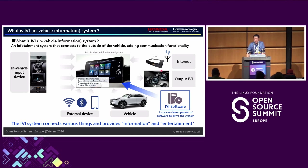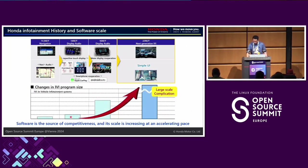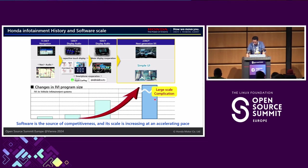For example, 32 or over 40 speakers are connected to the IVI system. Also, internet connectivity is already included. This page shows the history of software scale. Starting from Honda's 2011 model year, navigation plus audio systems were the starting point with a low source code level. But by 2023, the program code size had grown to a very large scale. Many other OEMs and tier-one companies face this same situation.